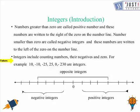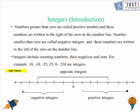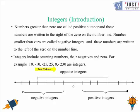Integers include counting numbers, their negatives, and zero. For example, 10, -10, -25, 25, 0, -230, 230 — all are called integers.